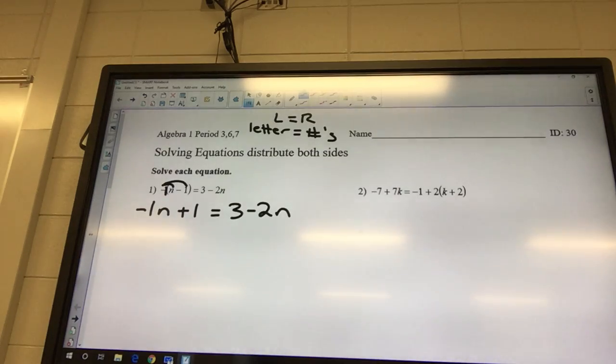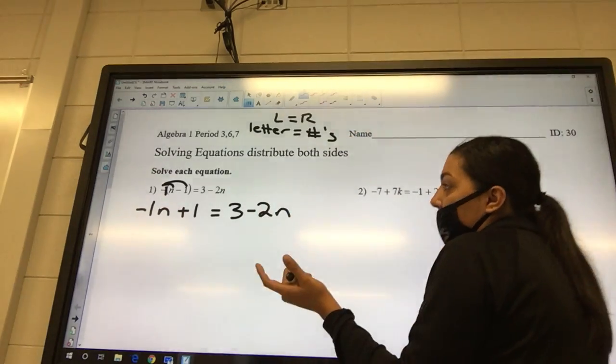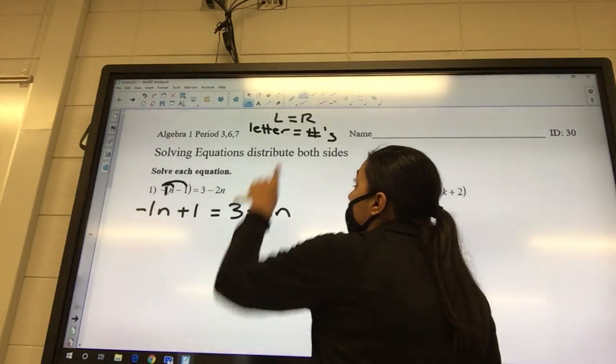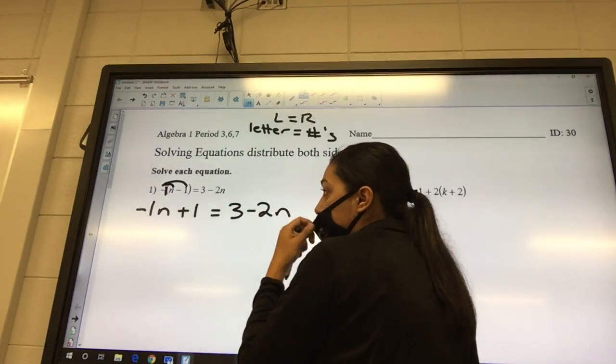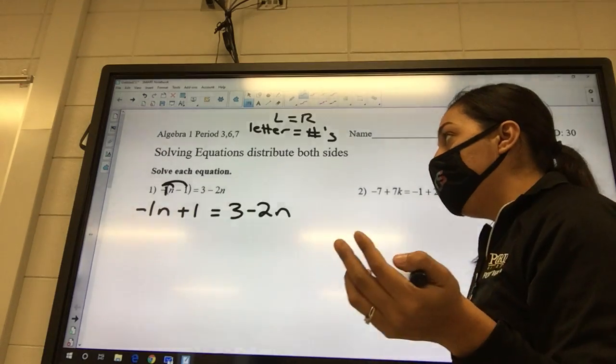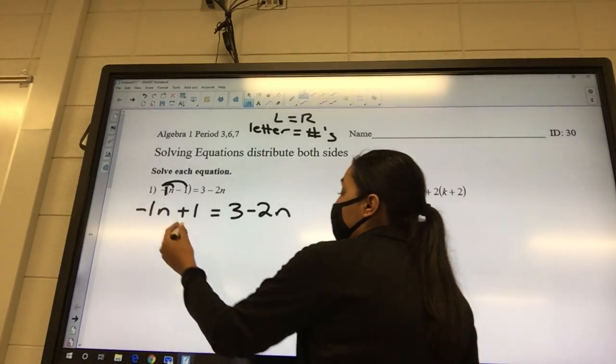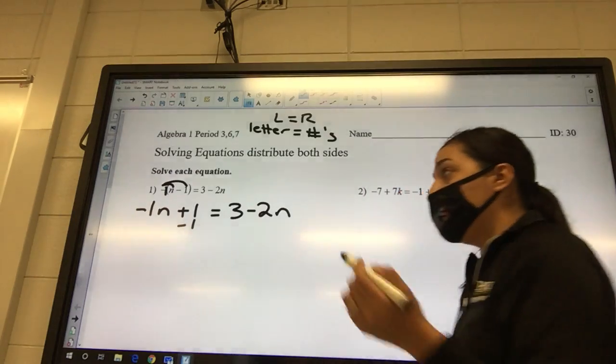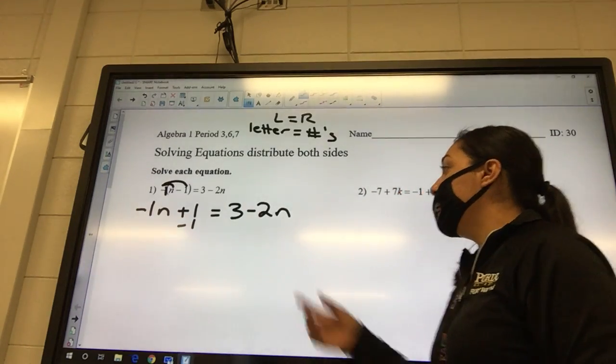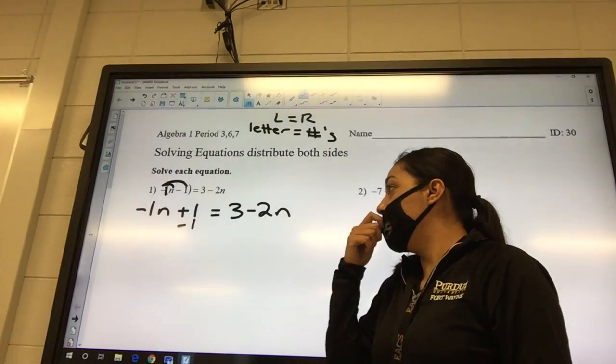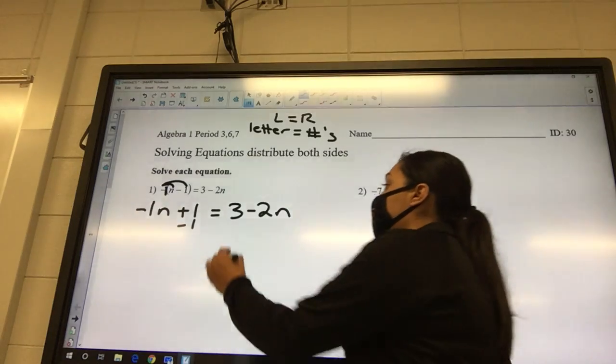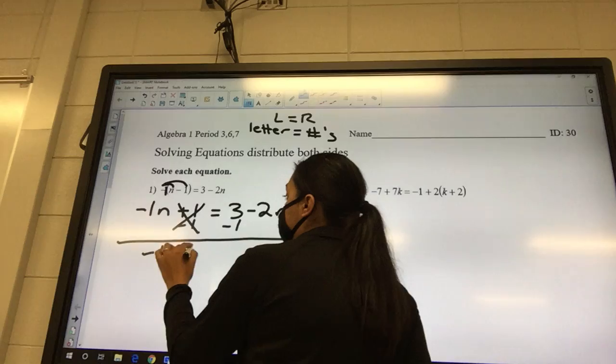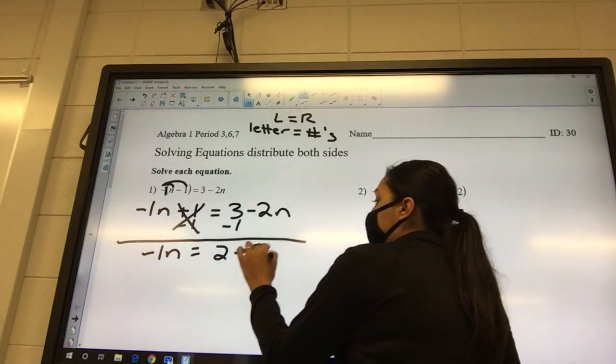So negative one n, is that a letter or a number? Yeah, it's a letter because it has a letter in it. Letters stay on the left. Positive one, that's a number. So how do I move a plus one? Minus one. And if I do it to one side, I gotta do it to the other side. Does it go under the three or under the two n? Under the three. So I got negative one n equals two minus two n.